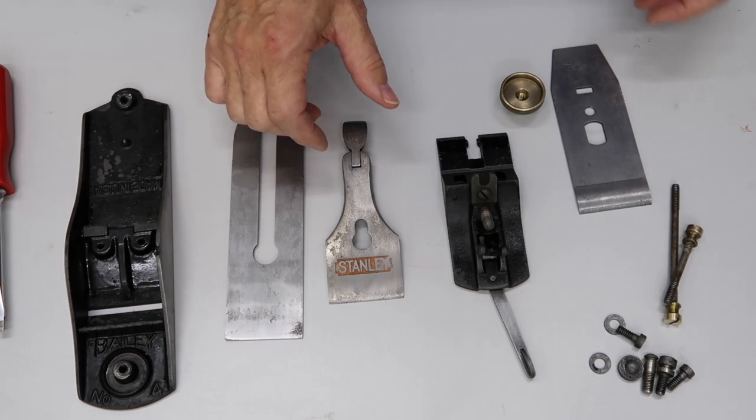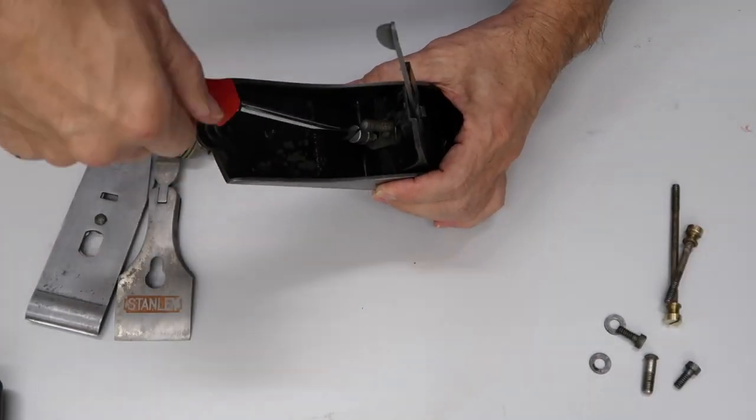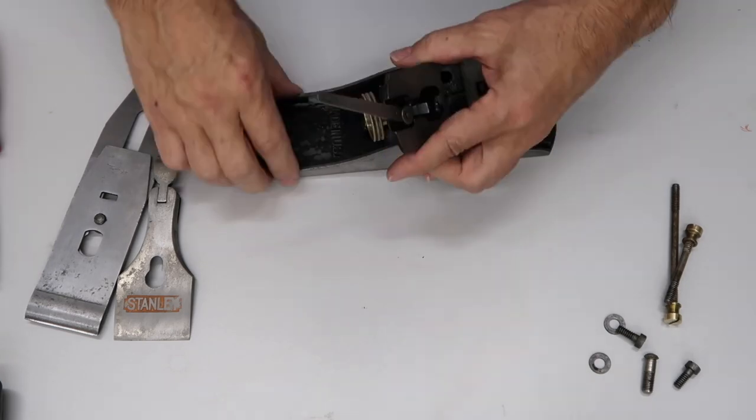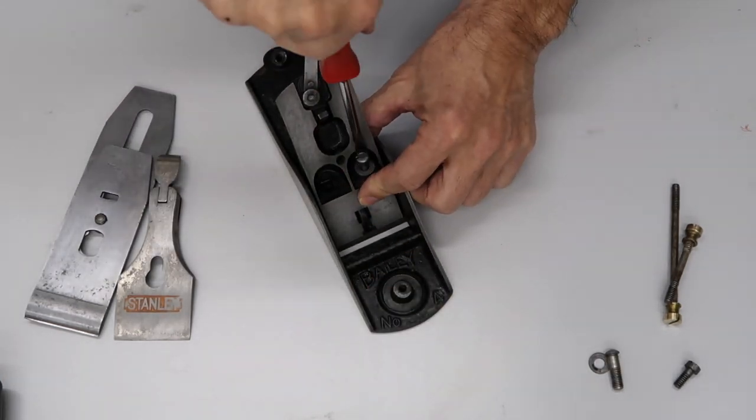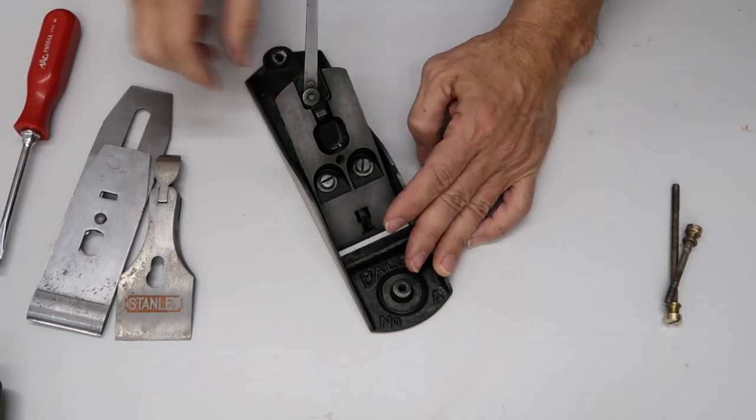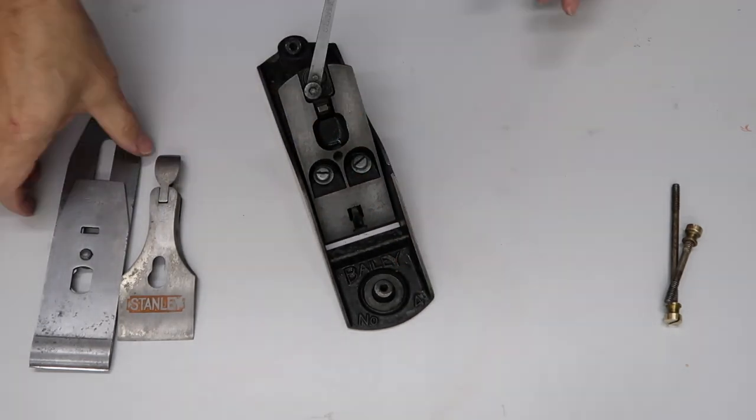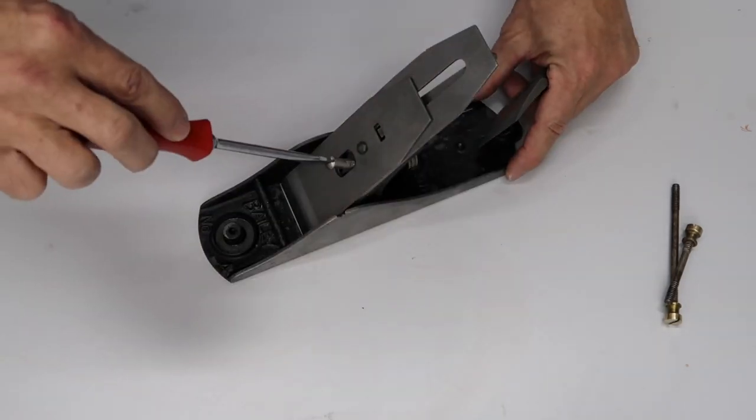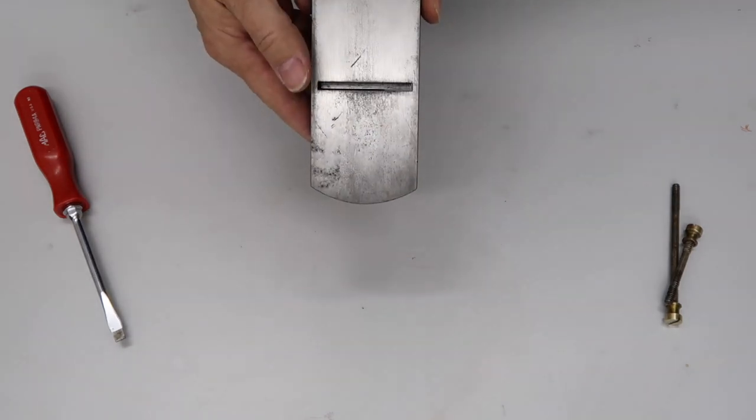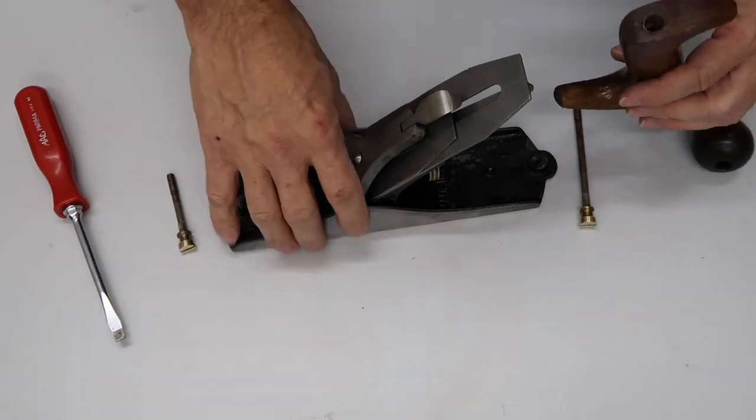Alright, let's start to put this together now. The blade is not sticking out yet, so now we're going to put the handles on - front handle and back handle.